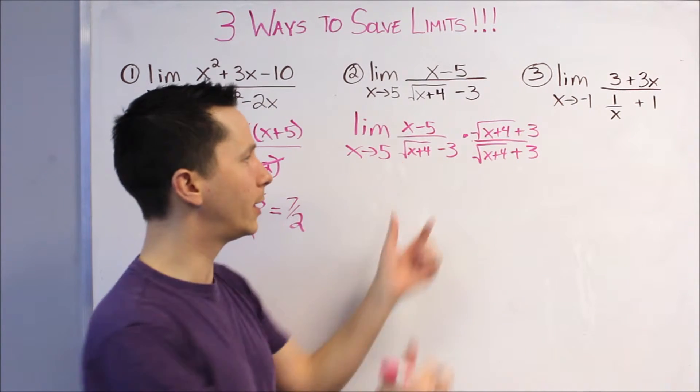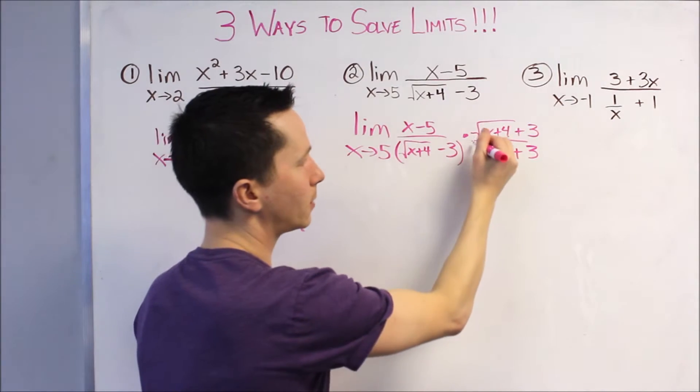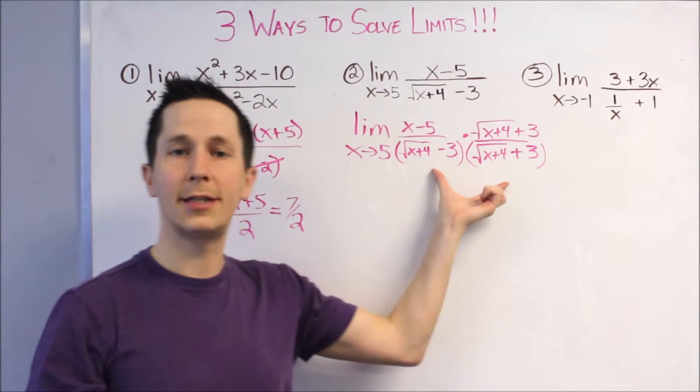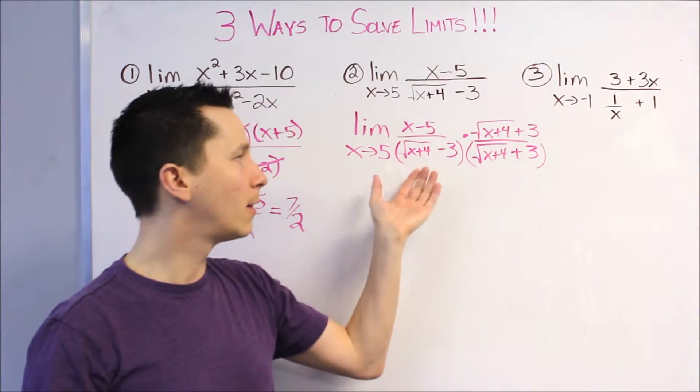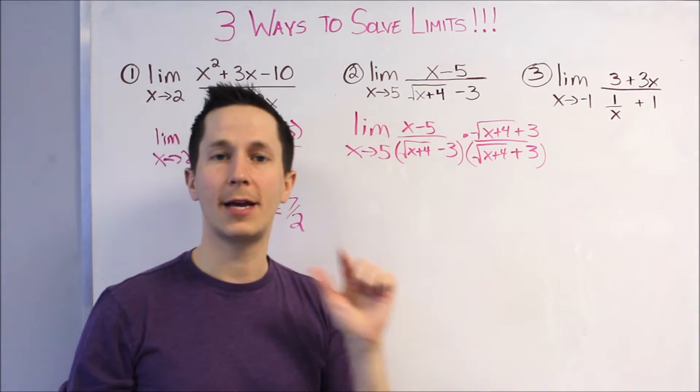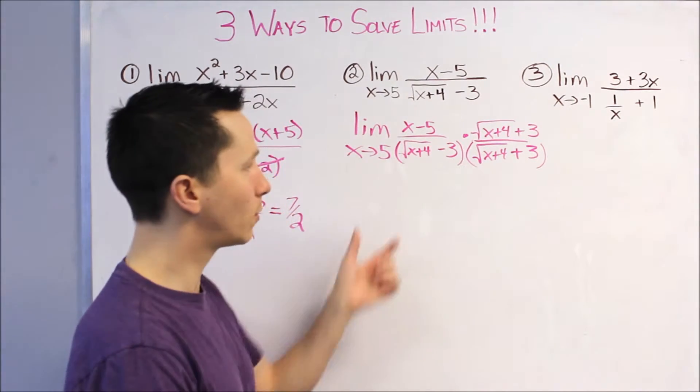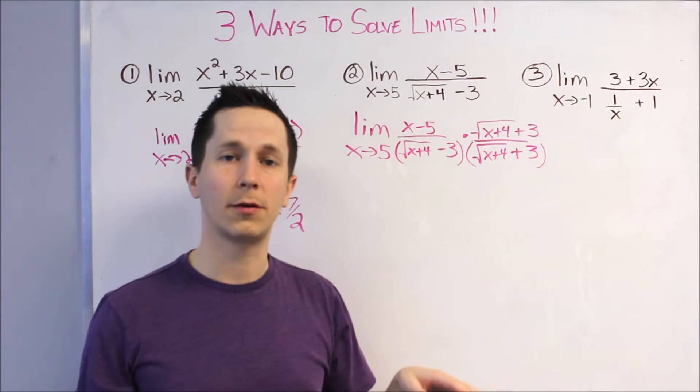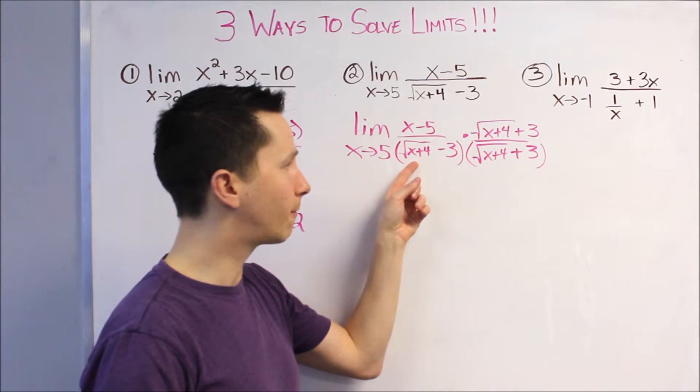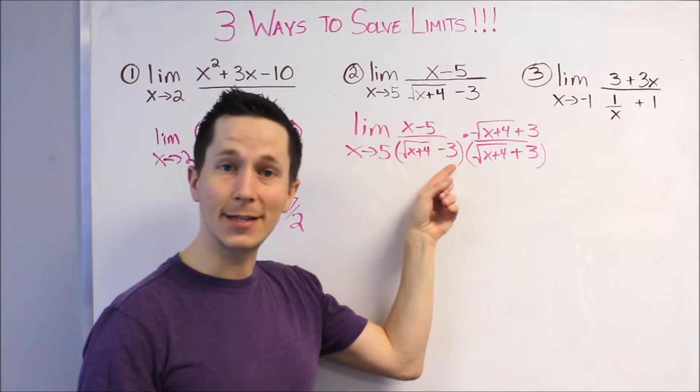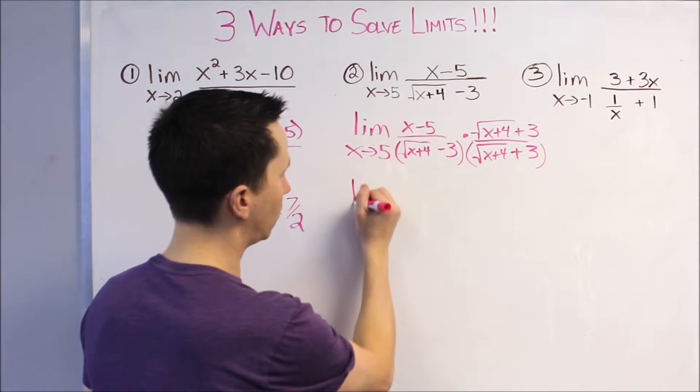And, what that's going to do is, if we look at how this bottom is going to multiply, this is a difference of squares, right? Each bracket is the same except for the sign change. So, when you multiply it out, the middle term is going to cancel. And, you'll just be left with the first term squared minus the second term squared. So, it's going to look like this.